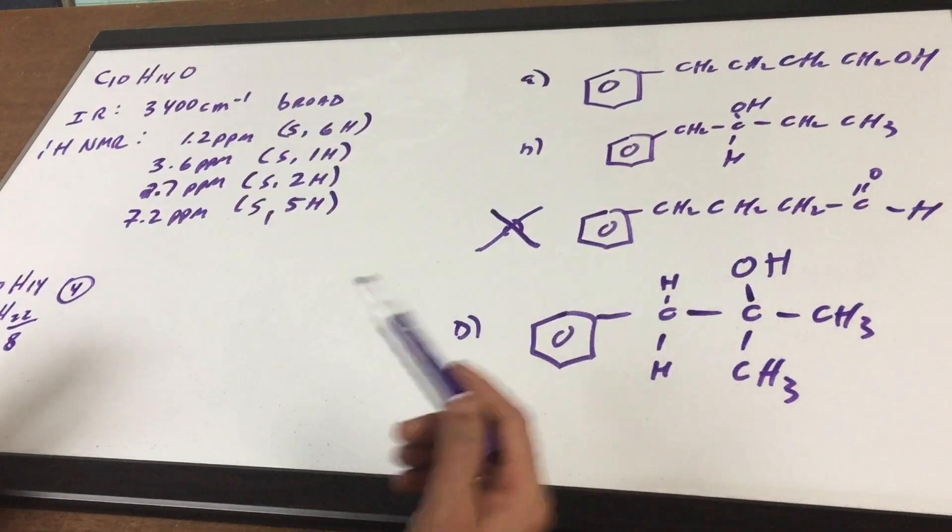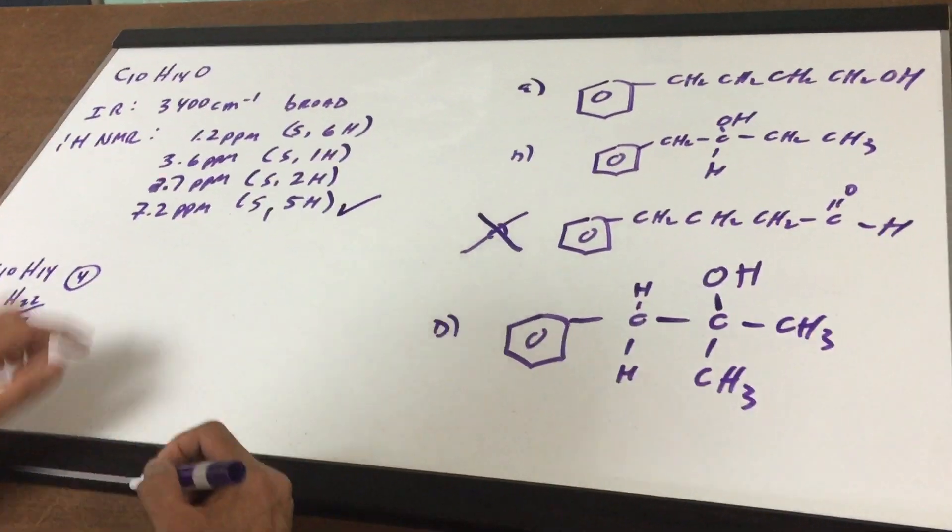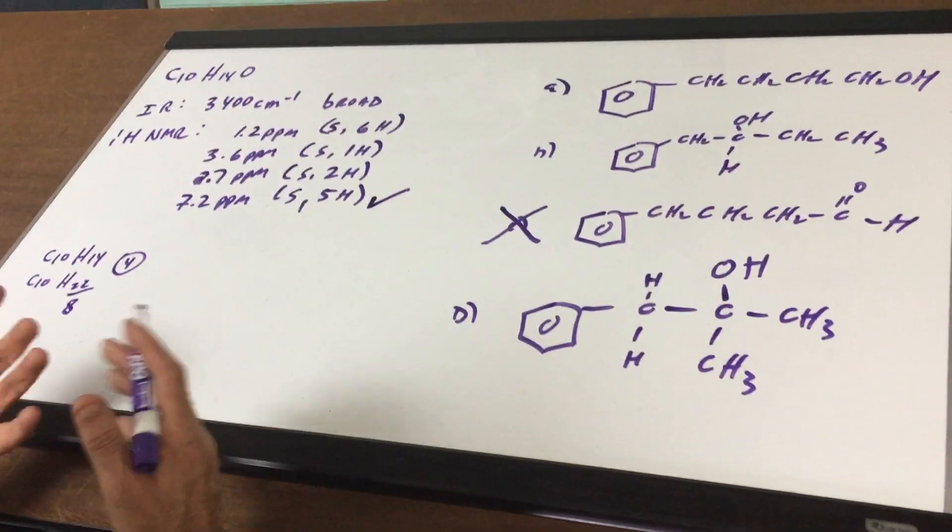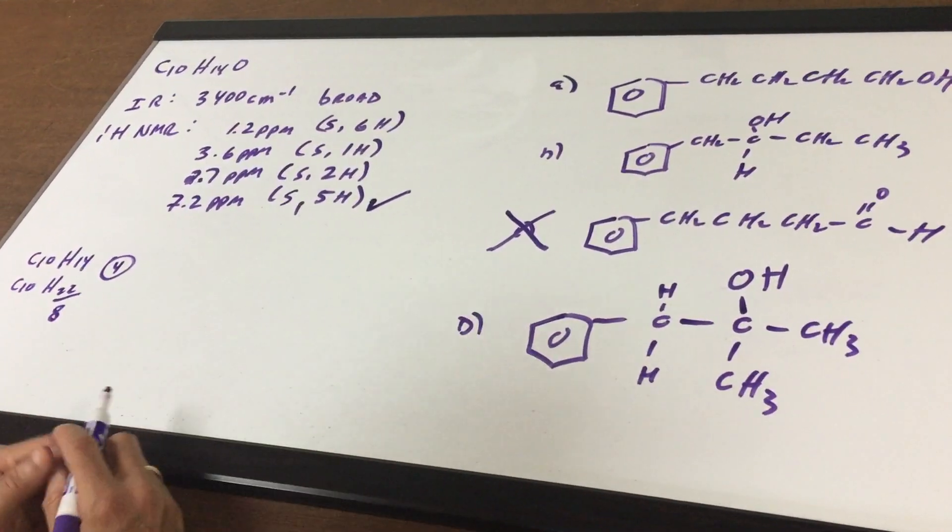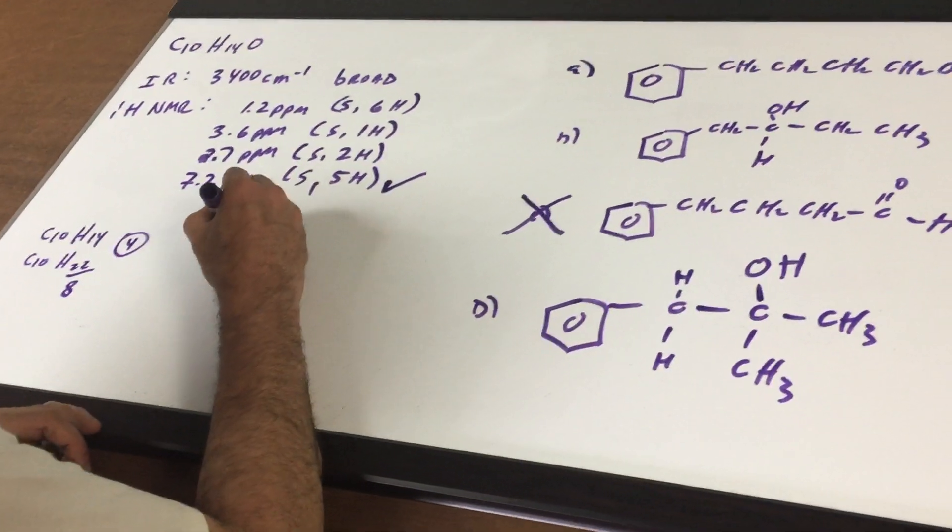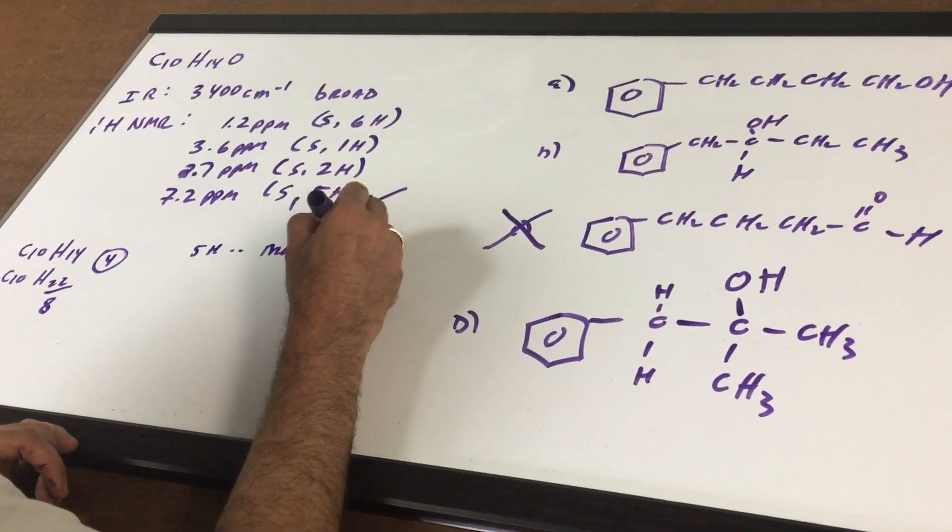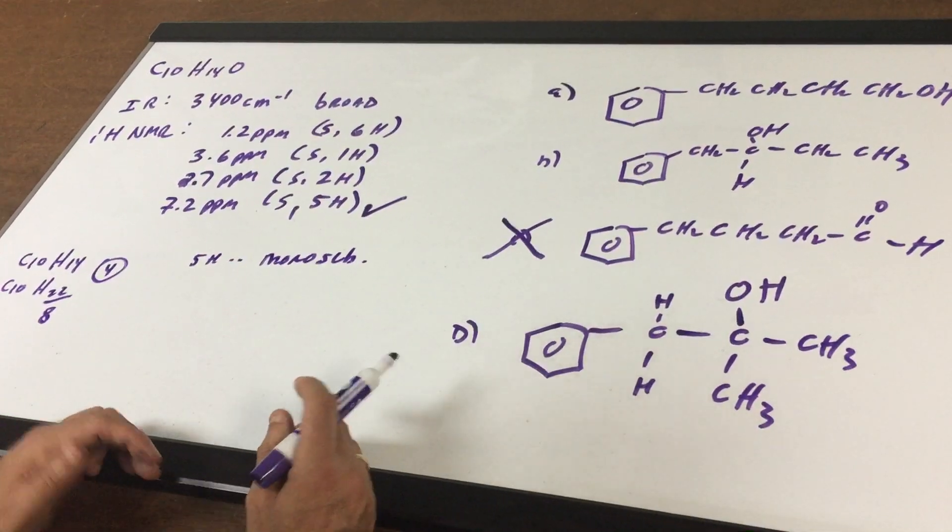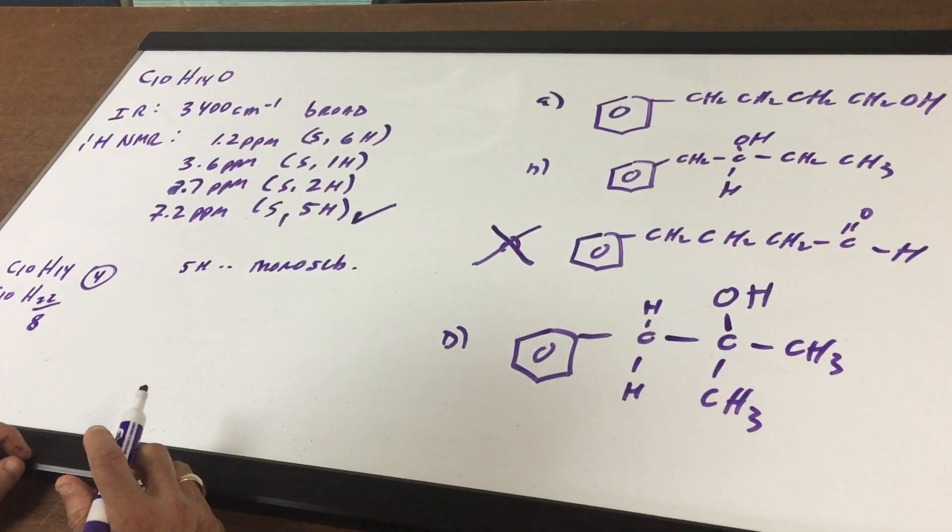And it says here in the NMR data 7.2, well they all are benzene rings so that's not going to help me too much. Then it says five H's so five H's means that it's a monosubstituted benzene ring. They're all monosubstituted so that doesn't help me either.